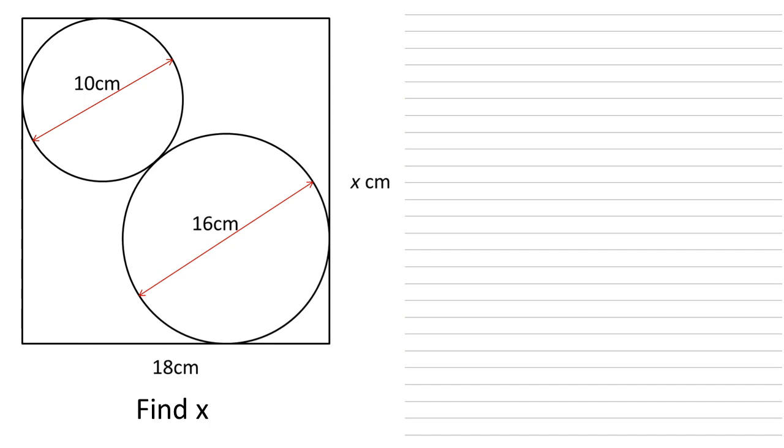We're given a rectangle measuring 18 centimeters by X centimeters. Inside the rectangle are two circles, one with diameter 10 centimeters, the other with diameter 16 centimeters.